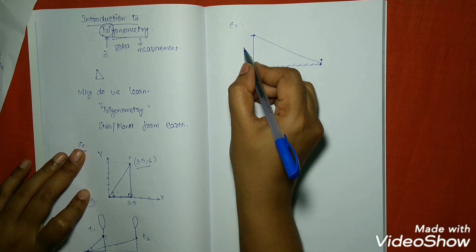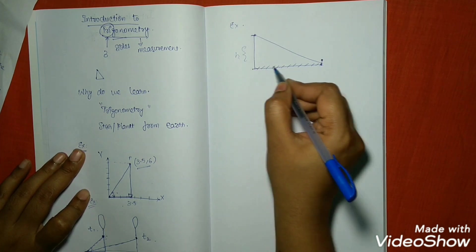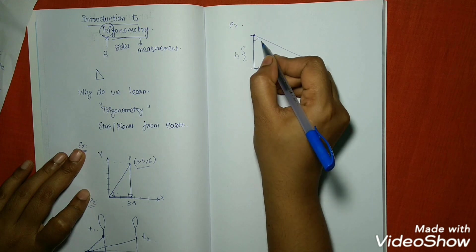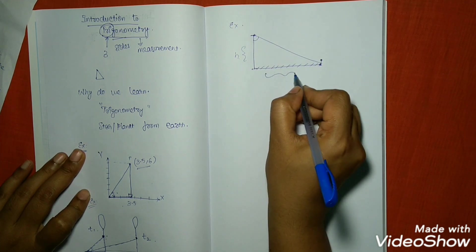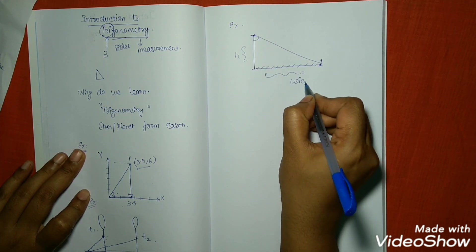If you know the height of the building and if you know at what angle she is observing, then you can find out the width of the river in this case.